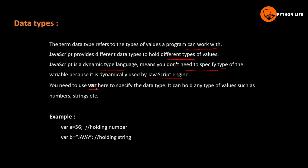You need to use the `var` keyword to declare a variable. You don't need to specify the datatype — just use `var`. It can hold any type of value such as numbers, strings, etc. You can also use `let` or `const`.